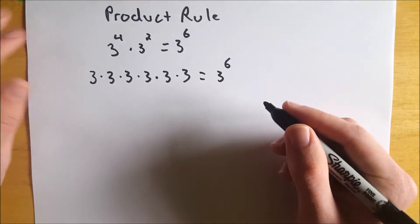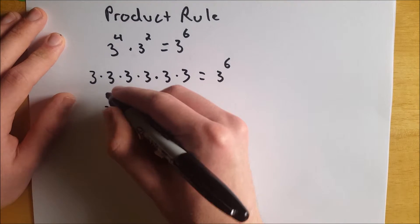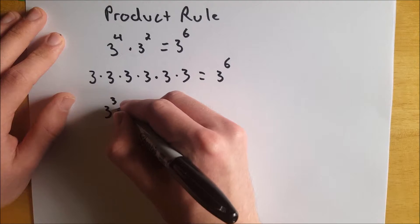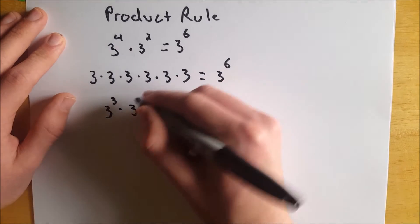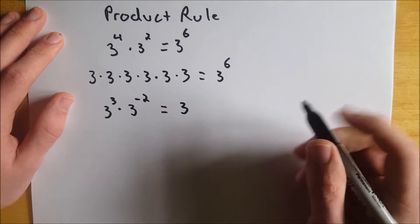so we get 3 to the 6. Now what about the product rule with negative exponents? Say we have 3 to the 3rd, and we multiply that by 3 to the negative 2nd. The product rule tells us that this is equal to simply 3.